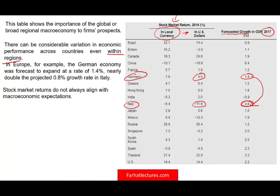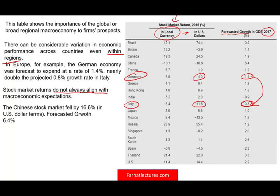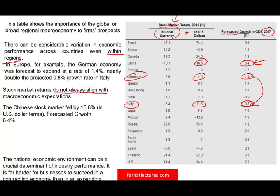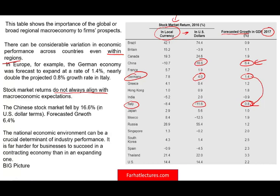Stock market returns do not always align with macroeconomic expectations. Take China — its GDP growth was 6.4% in 2016, the highest in the table and more than three or four other countries combined, yet the stock market return was negative at -16.6%. So economic growth doesn't guarantee a positive stock return, or vice versa. The national economic environment can be crucial, and you need to look at the global as well as the national and regional environment for your industry.